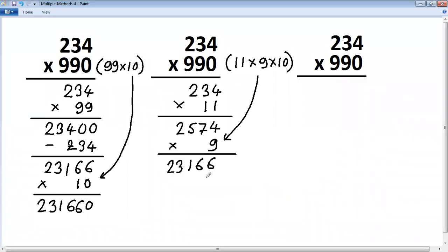Next, multiply by 10. So multiplying by 10, just put 0 at the end: 231660, same answer as the first.